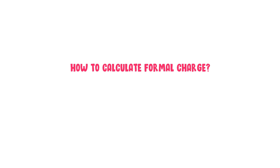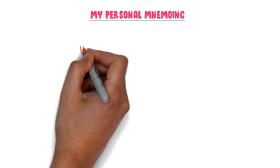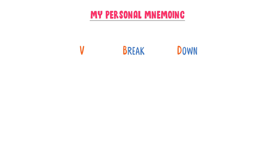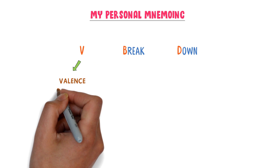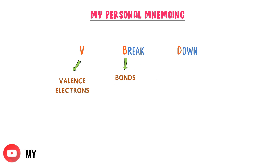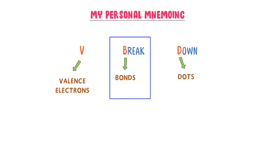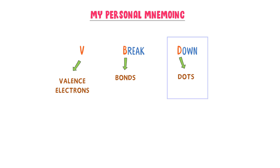How to calculate formal charge? I will teach you a super easy trick. Let me teach you my personal mnemonic to remember this trick. I always write V-B-D. Here V stands for valence electrons, B stands for bonds, and D stands for dots.